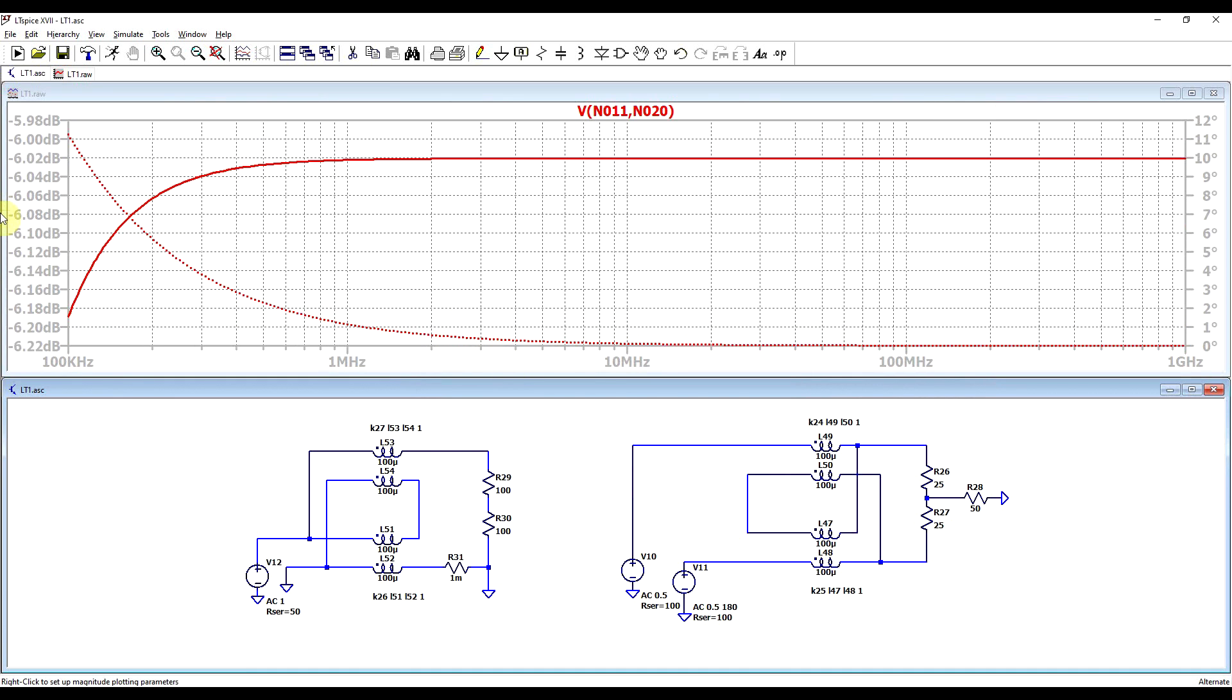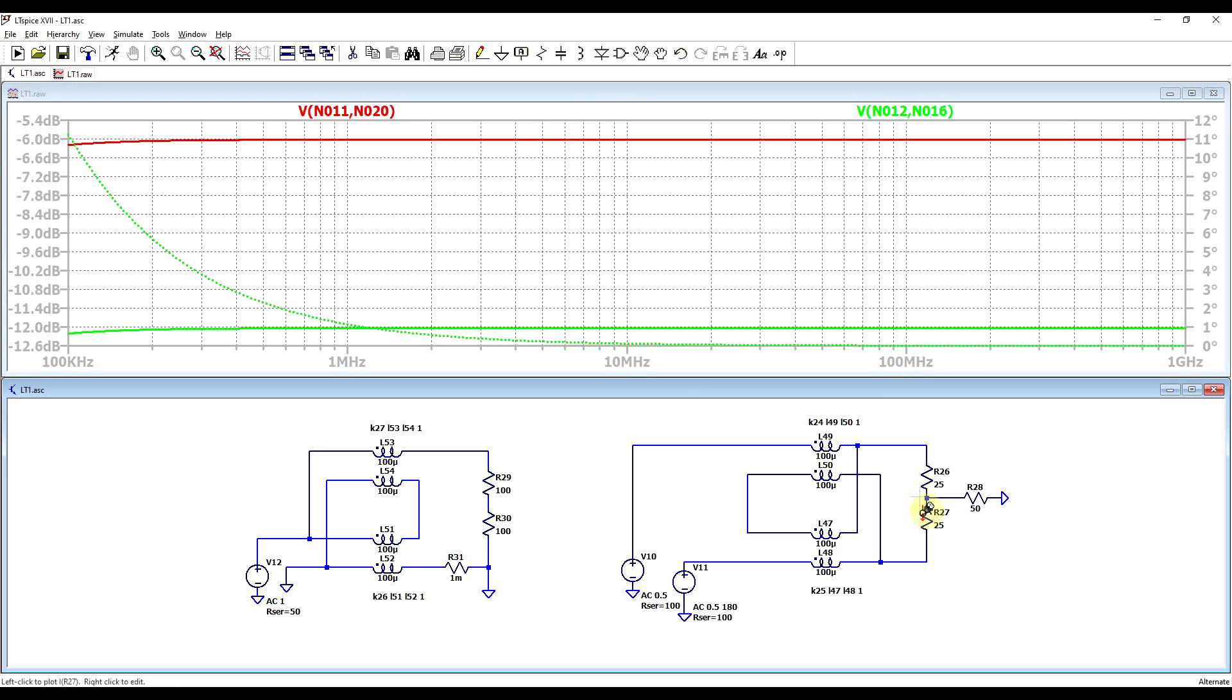Here we look at the input signal. Again we clearly see our minus 6 decibel point with zero degrees of phase shift, so this signal source is matched to the rest of the circuit. And the output has a signal amplitude 6 decibels lower, so it's half the input amplitude, giving us the expected result.